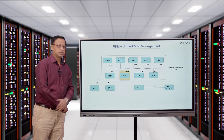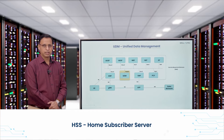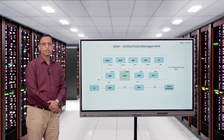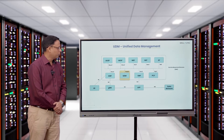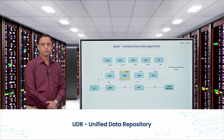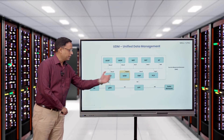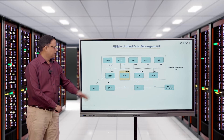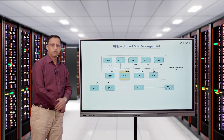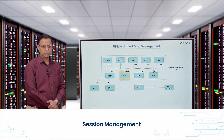UDM is typically similar to HSS, or Home Subscriber Server, in the 4G network. It takes care of management of all the user subscription data with the support of another repository called UDR, Unified Data Repository. It is similar to the front-end function of HSS. It provides all the user data to the AMF for access and mobility management, and to the SMF for session management.